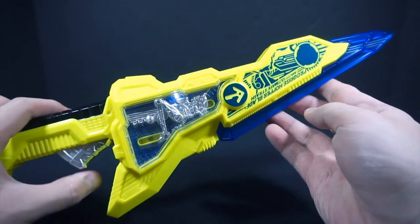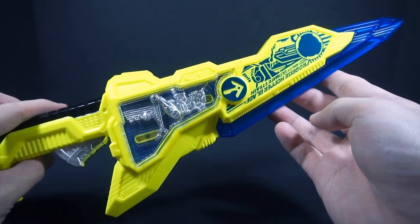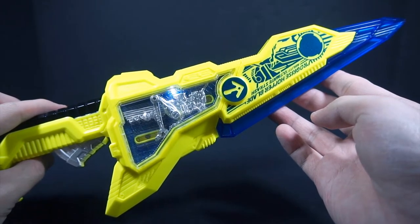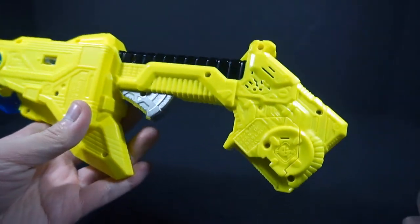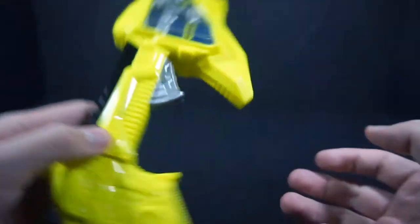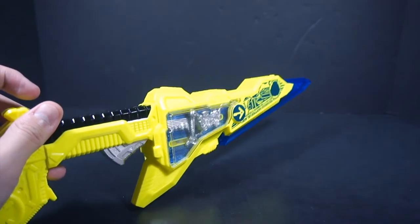Then you get the standby. So the first attack you get is Progrise and Slash. The speaker is here, I almost covered that up. And that's obviously basically it until you scan it with the Metal Cluster Hopper Progrise Key.